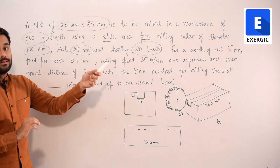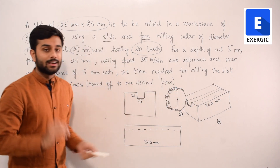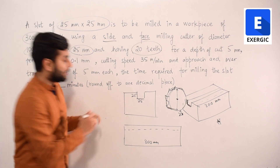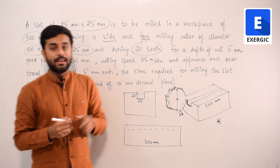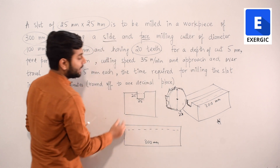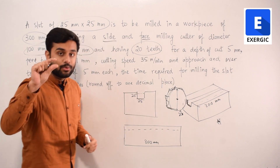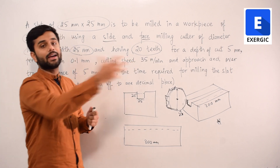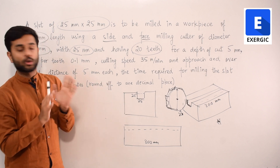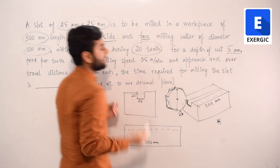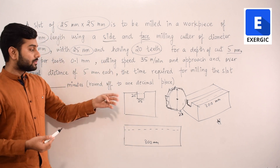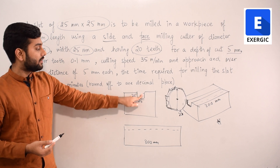For a depth of cut of 5 mm, the cutter as it moves through the workpiece does not directly create the full 25 mm depth — only 5 mm depth is created per pass. It makes one pass from end to end, creating 25 mm width but only 5 mm depth. Then it returns and repeats until the total depth of 25 mm is achieved. That means 5 passes are needed.